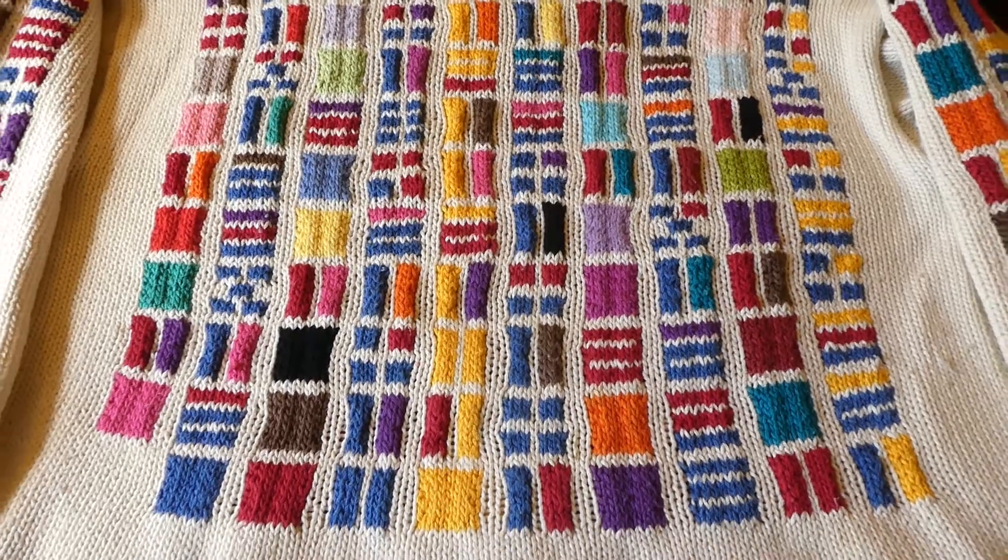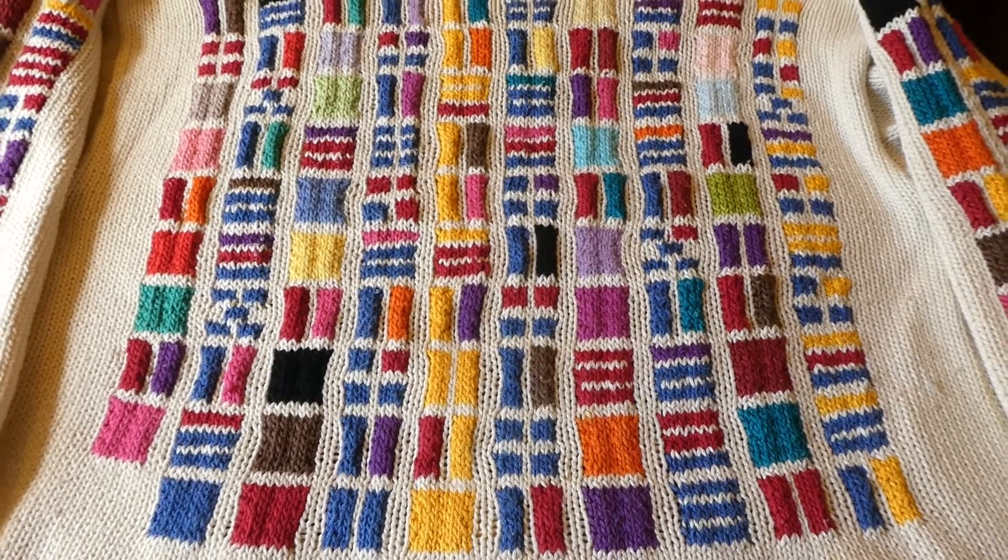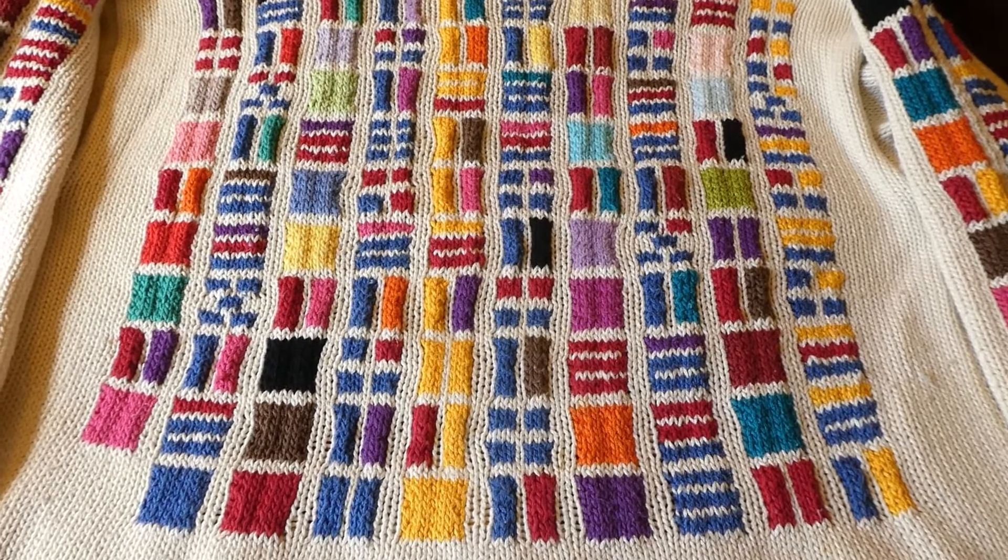So I'm wearing the sweater that started it off for me, my prime factorization sweater. What we've got on the sweater is 10 rows of 10 squares, and these are 100 numbers. They don't look like numbers, they just look like blocks of colors. Then on the back of the sweater I've got rows of eight, on the sleeves I've got rows of three and rows of two, but today we're going to just look at the front where we've got 10 rows of 10 squares.